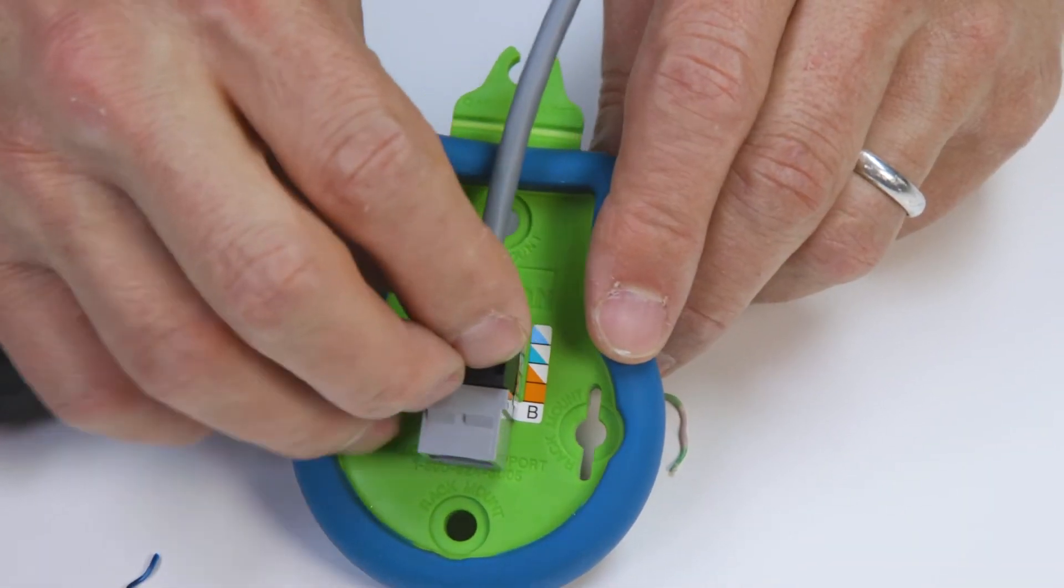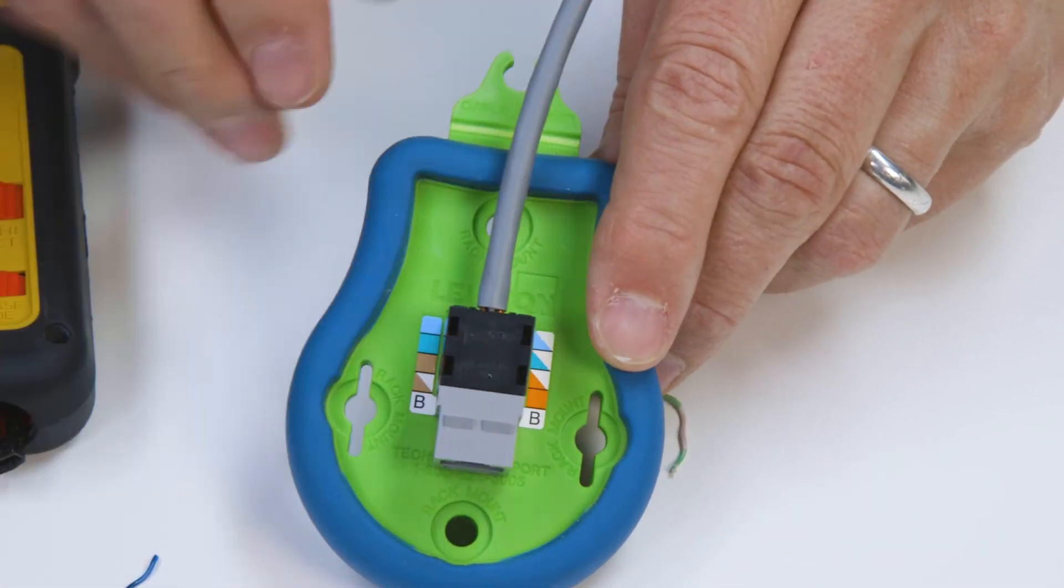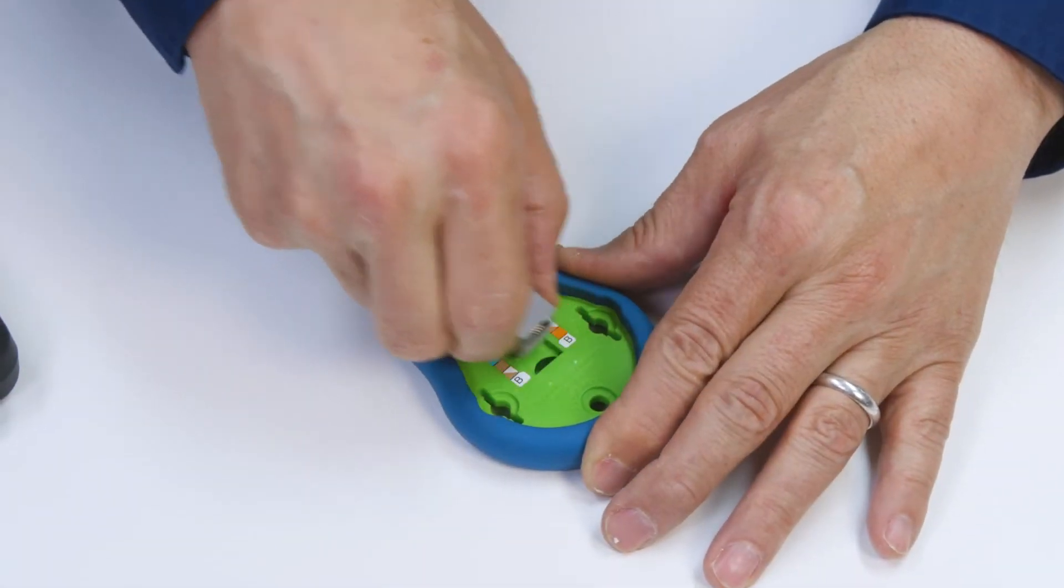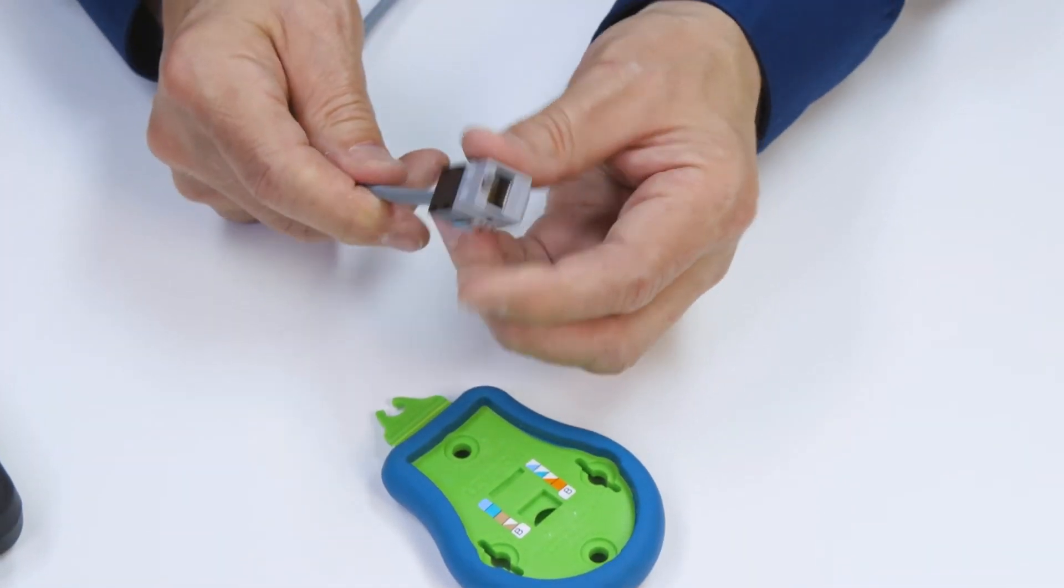Now snap the dust cover over the terminated jack. Then remove the jack from the palm tool. It is now ready for use.